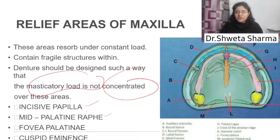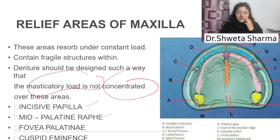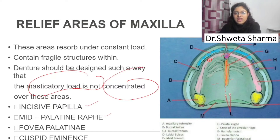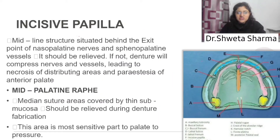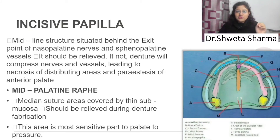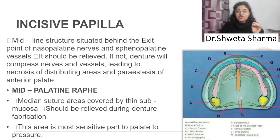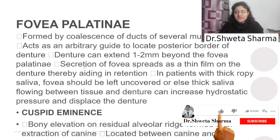The second relief area is the mid-palatine raphe. The third is the fovea palatinae. The fourth is the cuspid eminence. The incisive papilla is a midline structure situated behind the exit point of the nasopalatine nerve, behind the central incisors. It transmits the nasopalatine nerves and sphenopalatine vessels. This incisive papilla should be relieved, otherwise the nerves and blood vessels will be compressed.